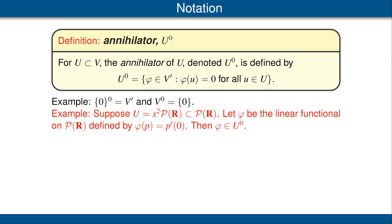That follows from the product rule. Think about phi applied to x squared times a polynomial — that's the derivative of x squared times the polynomial. By the product rule, when we evaluate that at 0, we will get 0. Be sure you verify this example.